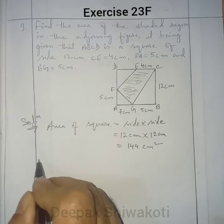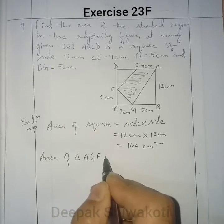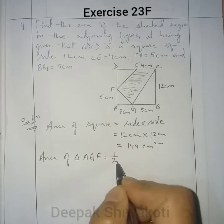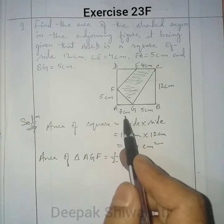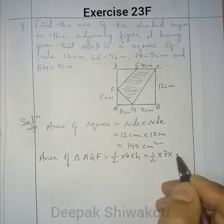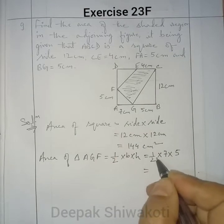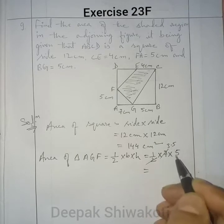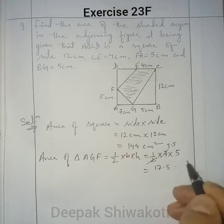Let us find the area of triangle AGF. It is given by half × base × height. The base of AGF is 7 cm and the height is 5 cm. So, half × 7 × 5 = 3.5 × 5 = 17.5 cm².